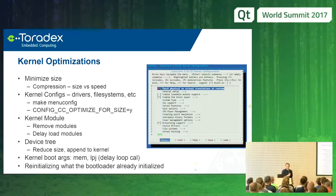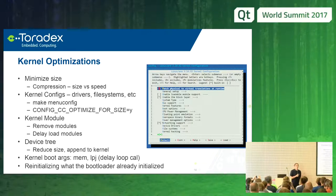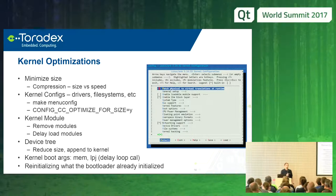For kernel optimizations, minimizing size helps — remove features. There are also different compression options, which involve a trade-off between compressed size and CPU cycles, since decompression takes time too. A smaller kernel loads faster but takes longer to decompress. It really depends on the CPU power of your embedded system. LZO is a good selection that worked well on an i.MX6.